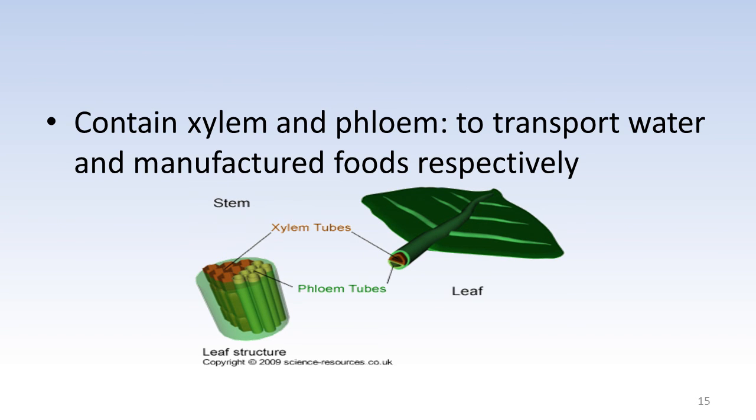The xylem vessels and the phloem tubes are very close to the photosynthesizing cells in the mesophyll layer that you would see very shortly. The xylem supplies water to the chloroplast while the phloem will remove organic products made during photosynthesis.